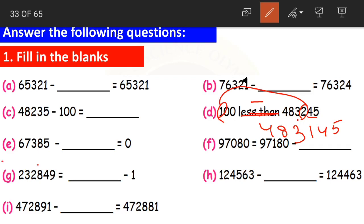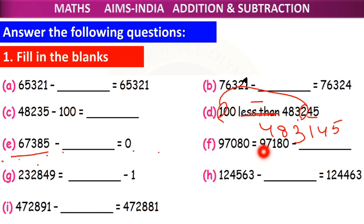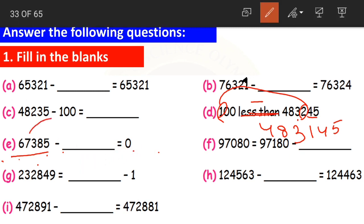Question E: 67,385 minus dash equals 0. We have learnt a property — subtracting a number from itself gives 0. The answer here is 0, so the same number must have been subtracted. Therefore 67,385 must be subtracted. When a number is subtracted from itself, the answer becomes 0.